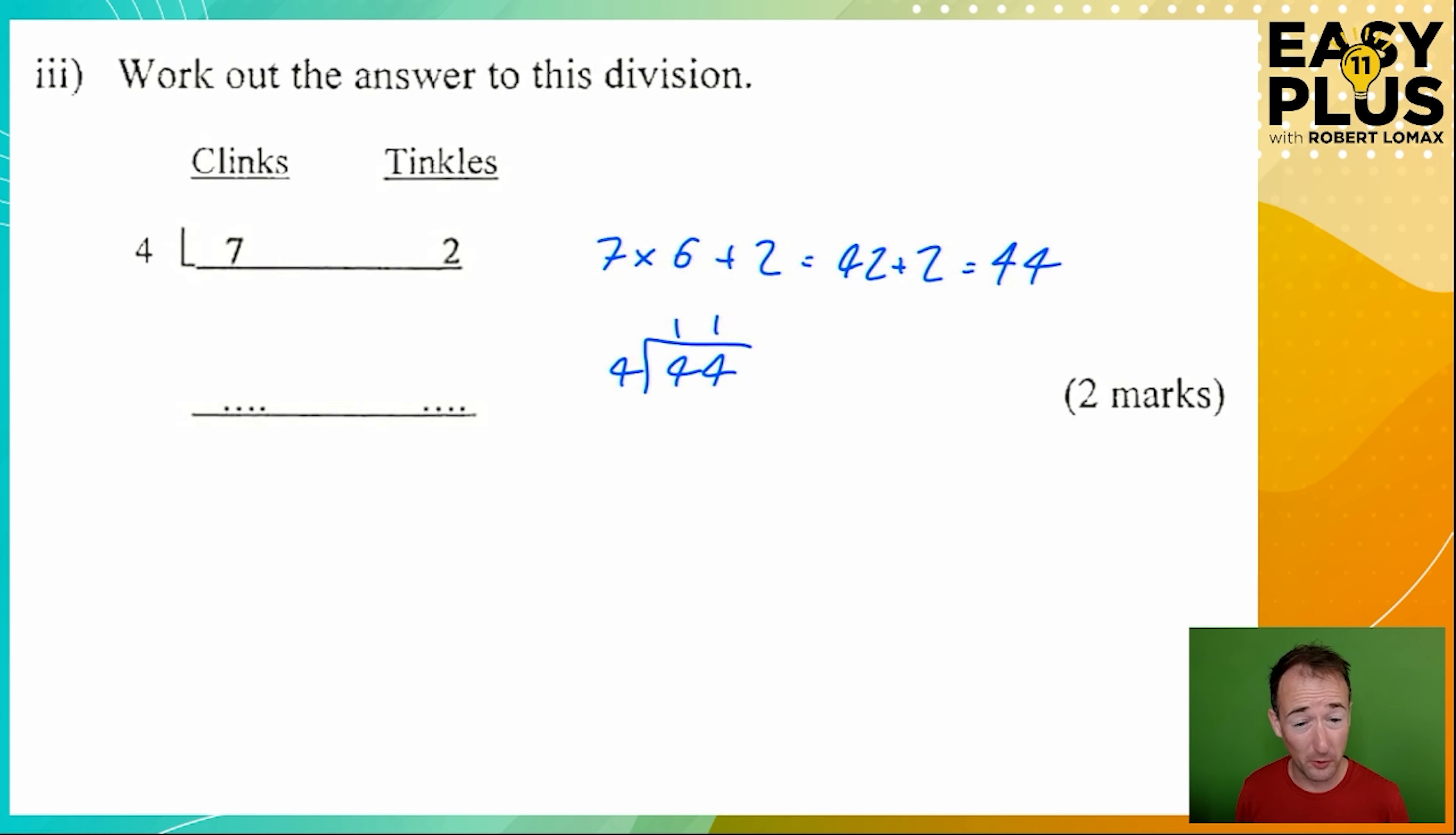So we've got 11 tinkles. But of course 11 tinkles is more than a clink, because a clink is 6 tinkles. If 11 is 6 plus 5, then 11 is 1 clink and 5 tinkles.